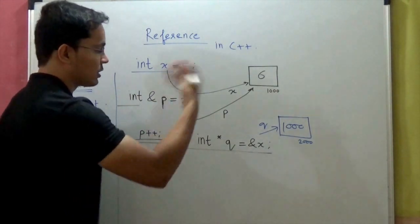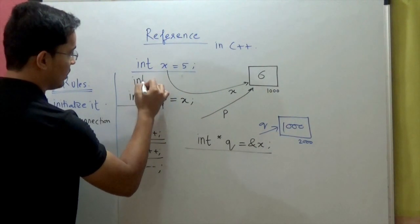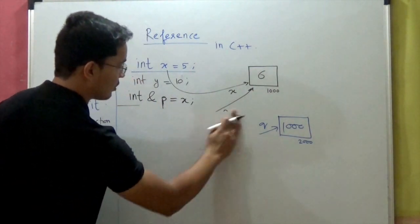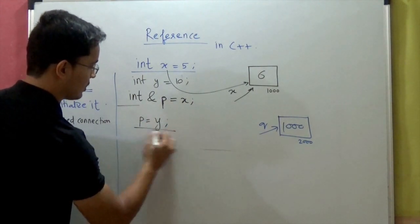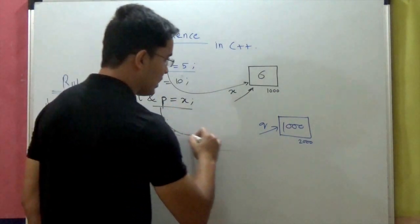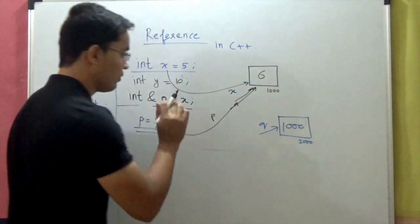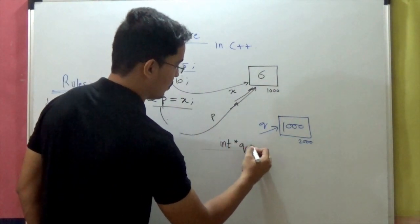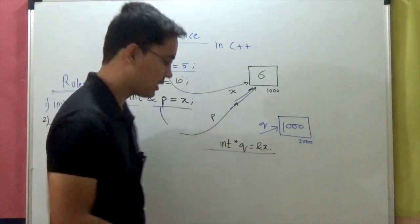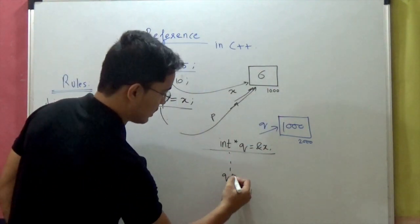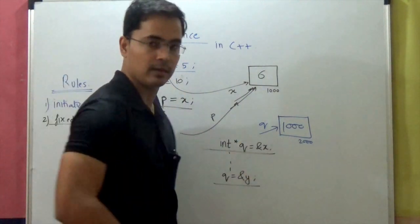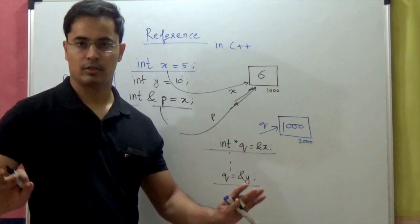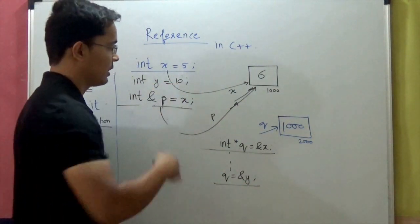You cannot ever reassign p to some other variable. For example, if you create integer y equal to 10, once you initialize this reference with x, you cannot later say p equal to y. It's a fixed connection — p is an alias to the memory location pointed by x, and it will remain so for its lifetime. Unlike pointers, where int star q equal to ampersand x stores the address of x, but you can later say q equal to ampersand y to store the address of y. So a pointer is a flexible connection, but a reference is a fixed connection.